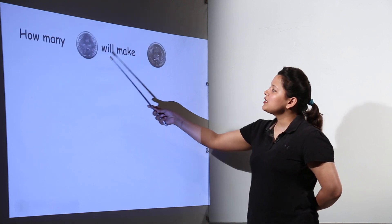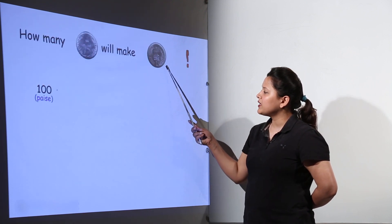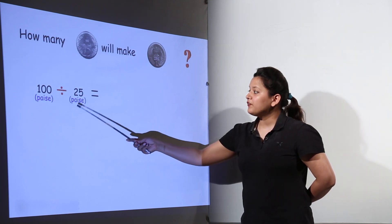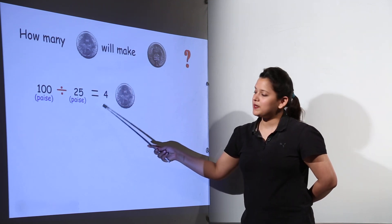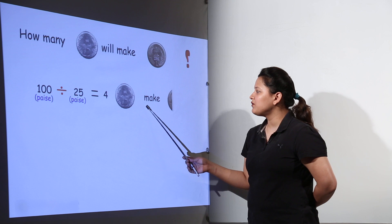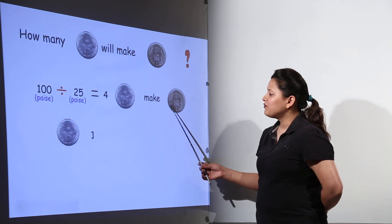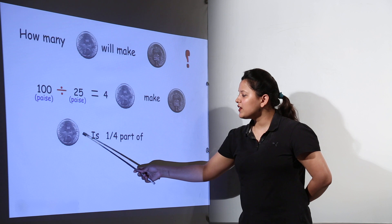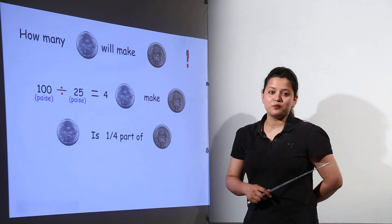Now we shall learn how many 25 paisa coins make 1 rupee. 100 paisa divided by 25 paisa gives us 4 — so four 25 paisa coins make 1 rupee. Therefore we can say that 25 paisa is one-fourth of 1 rupee.